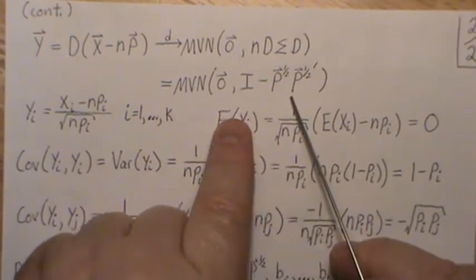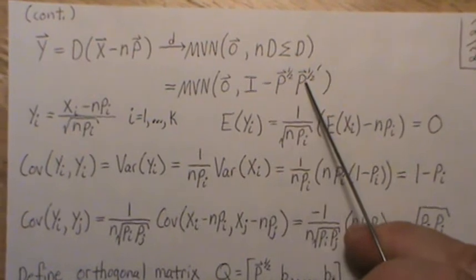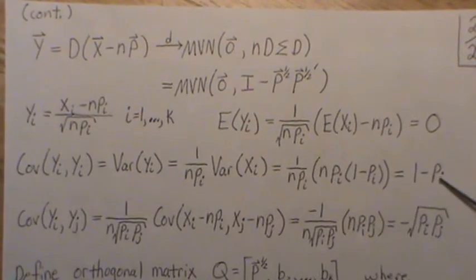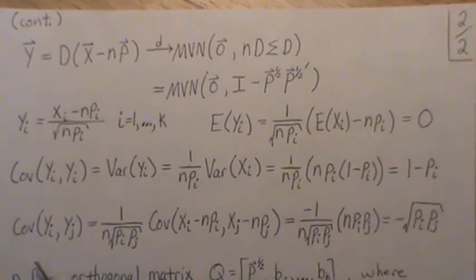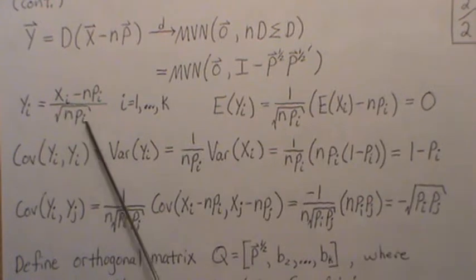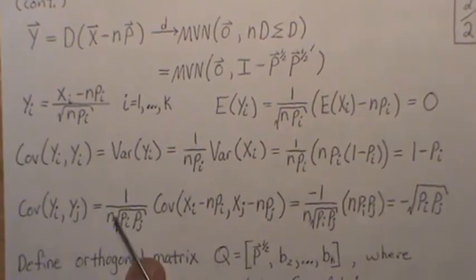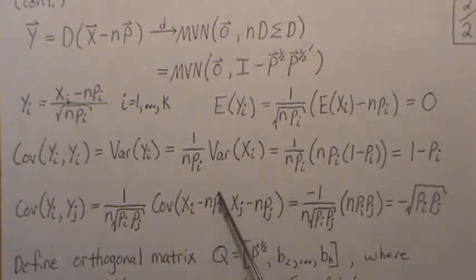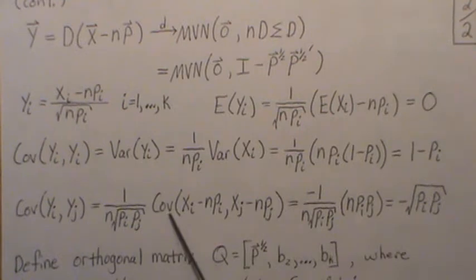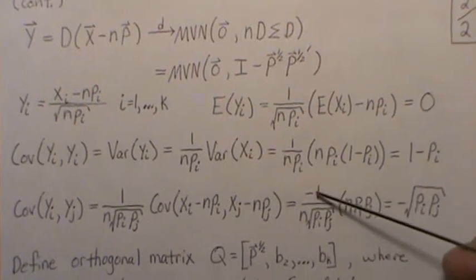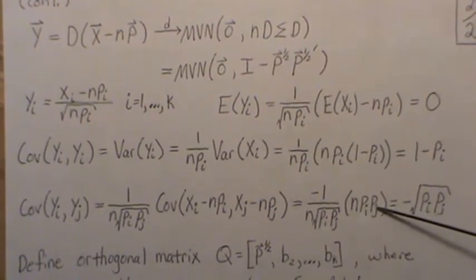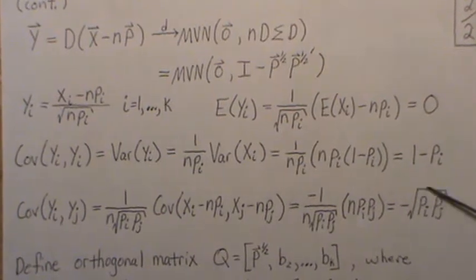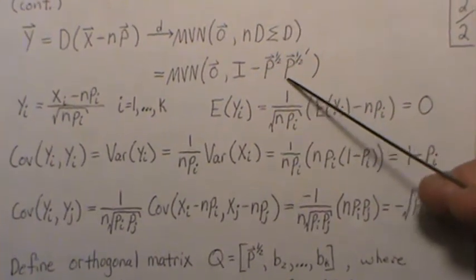Down the diagonal, the matrix p^(1/2)*(p^(1/2))^T has p_i as entries, and one minus that gives the diagonal of the covariance. For the off-diagonal, the covariance of Y_i and Y_j brings out 1/n as a factor and sqrt(p_i)*sqrt(p_j), and the covariance of X_i and X_j — shown in the earlier video — is minus n*p_i*p_j. After cancellation, we get minus sqrt(p_i * p_j), which is exactly the off-diagonal entry of I minus p^(1/2)*(p^(1/2))^T.